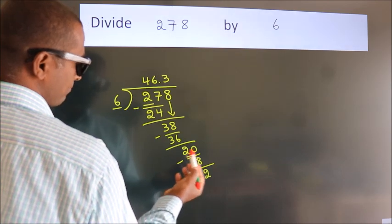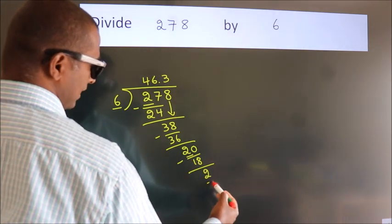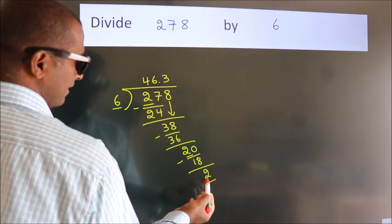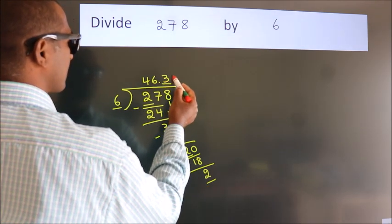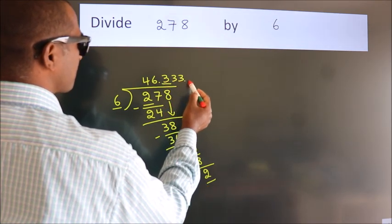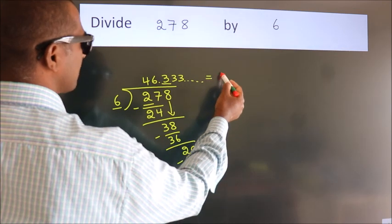here and we got 2 again. That means this number keeps on repeating. So this is our quotient.